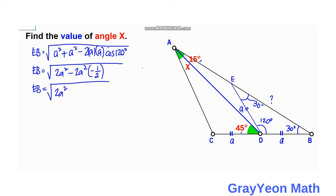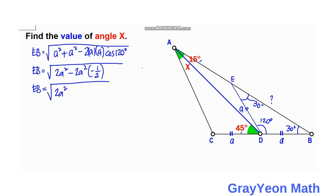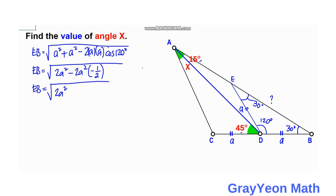Next, we consider the small angle Y at point E. It forms a straight line with the 45-degree angle and the 120-degree angle, so Y plus 45 plus 120 equals 180. Solving: Y equals 180 minus 45 minus 120, which gives us an angle of 15 degrees.